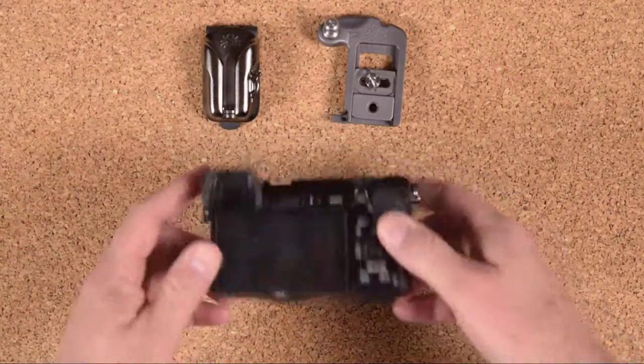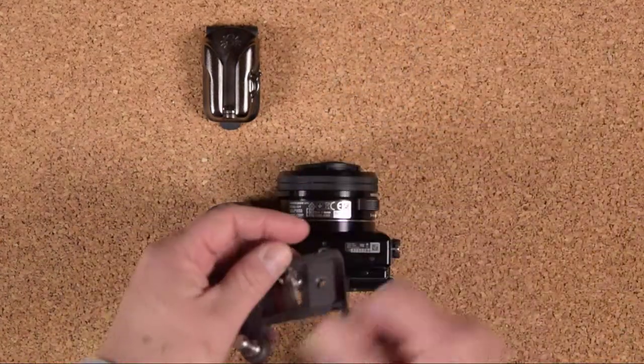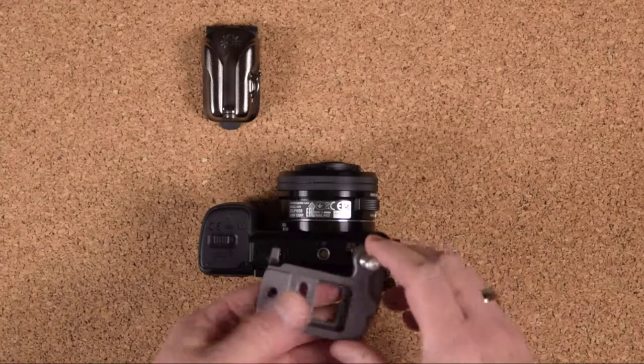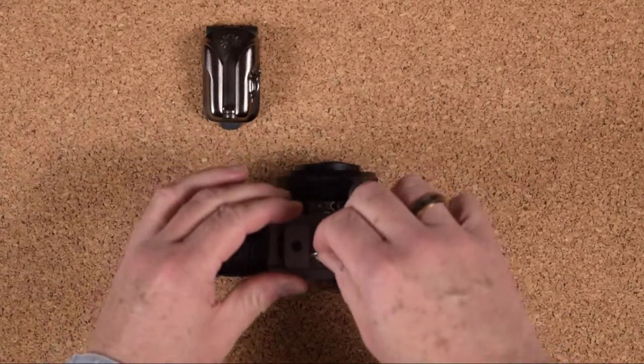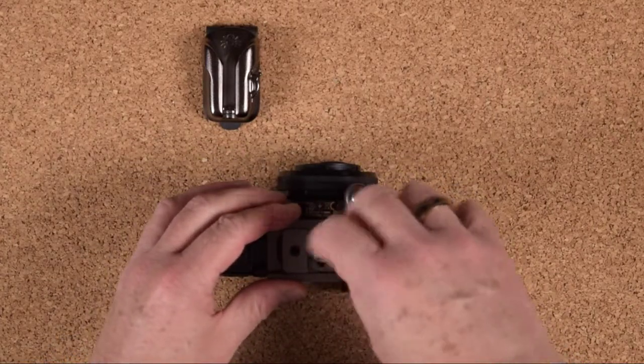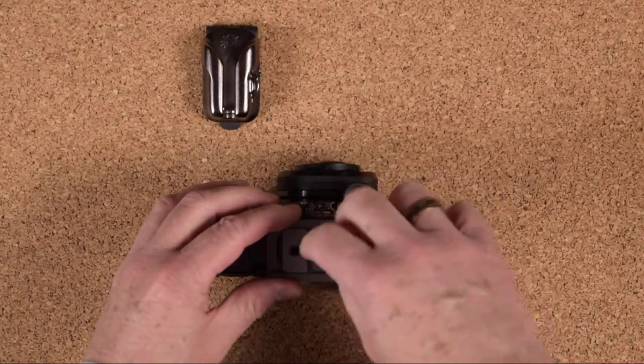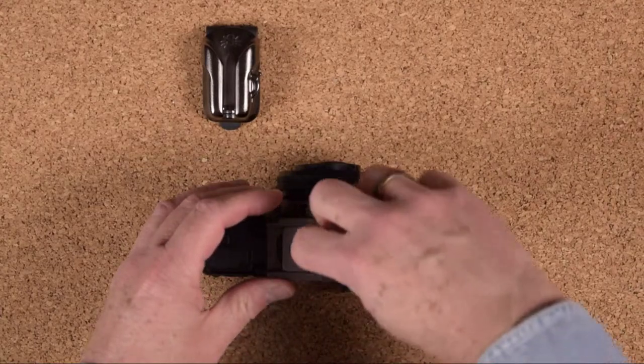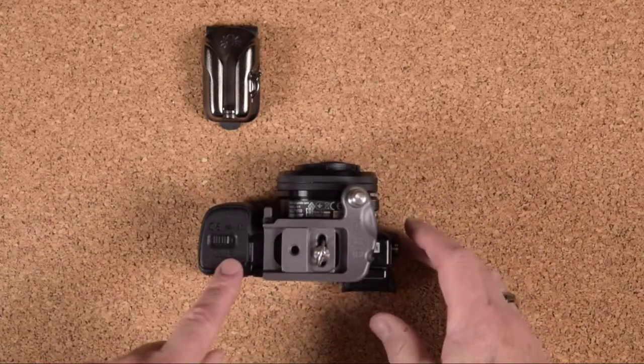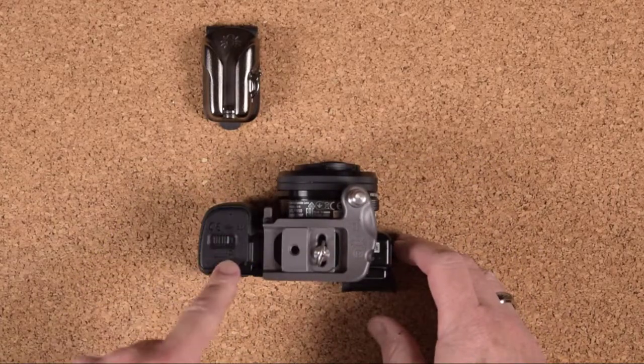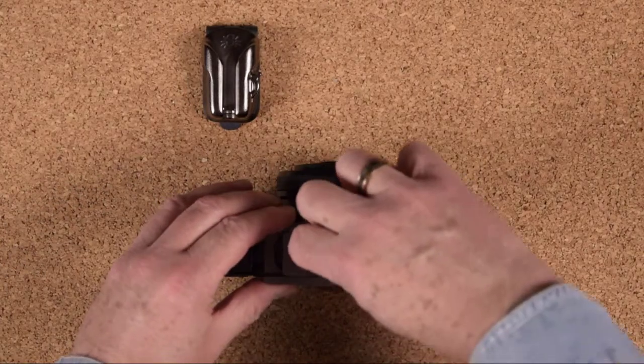I'm just going to thread this into the quarter-20 on the bottom of the camera like so. You have quite a bit of adjustment here, so on the Sony a6000 you don't have to worry about it interfering with the battery door.